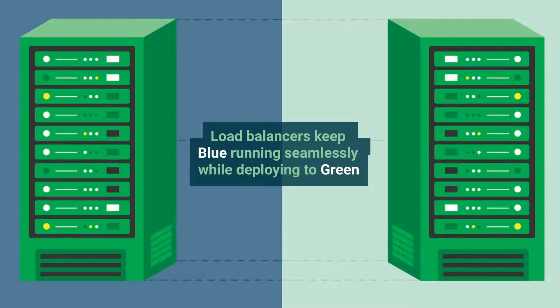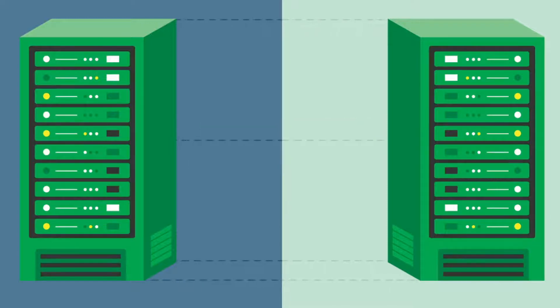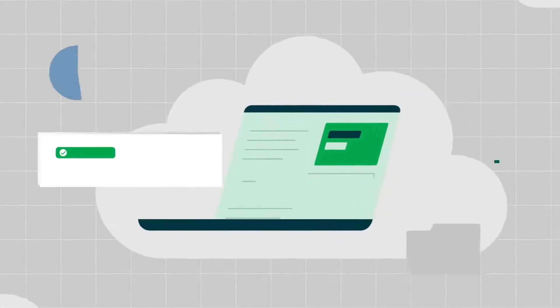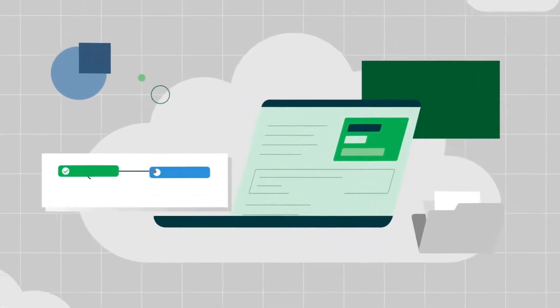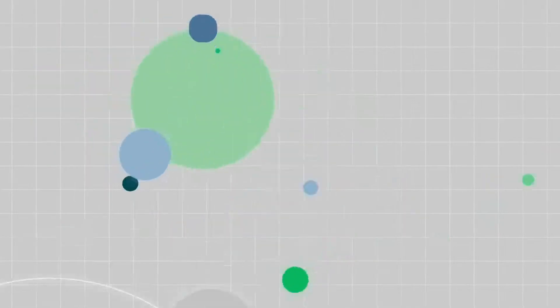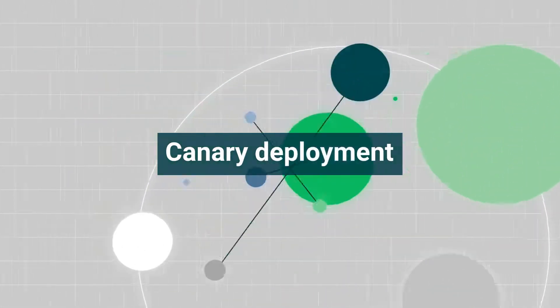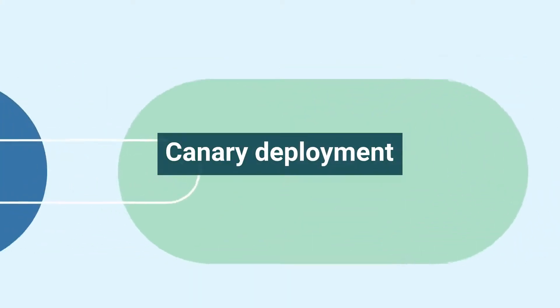Using load balancers to direct traffic keeps blue running seamlessly for production users while you test and deploy to green. When deployment and testing succeed, you can then switch your load balancer to target green with no perceptible change for your users. If you have limited resources, or if your application is modular and configuration driven, you may want to use canary deployment instead.